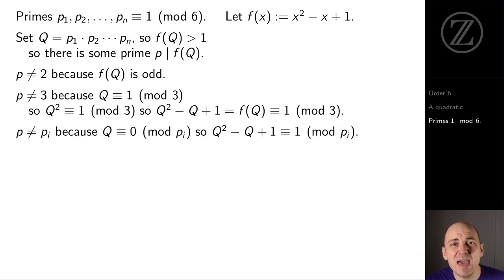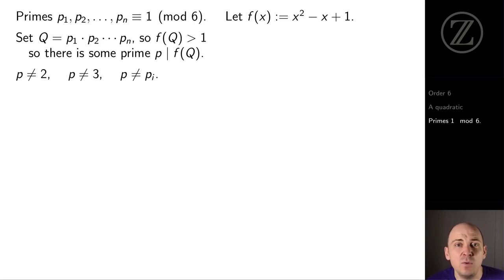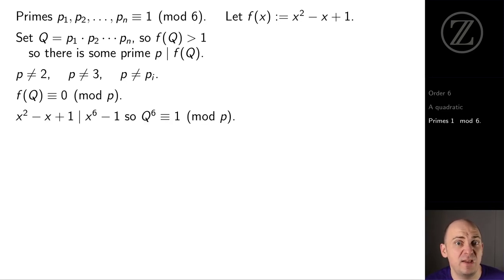That prime p can't be any of the pi either. Why not? The Q squared and Q terms are both multiples of pi, so Q squared minus Q plus 1 cannot be a multiple of pi. So we've got a prime p which isn't one of the pi and isn't 2 and isn't 3. So f of Q is 0 mod p. And since x to the 6 minus 1 is a multiple of x squared minus x plus 1, we have that Q to the 6 is 1 mod p.